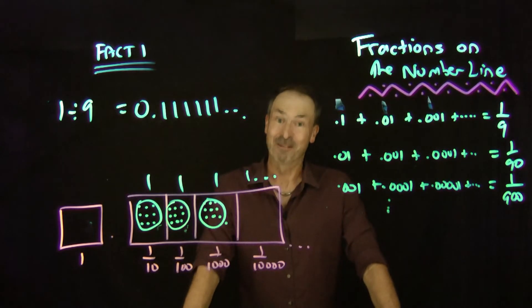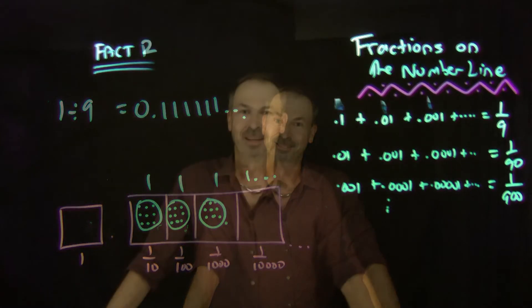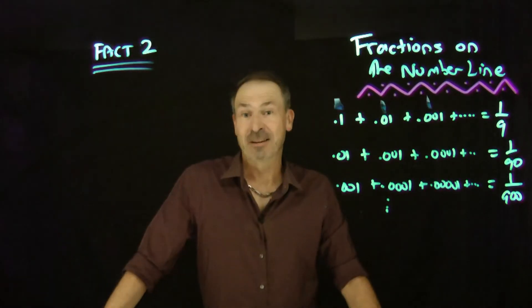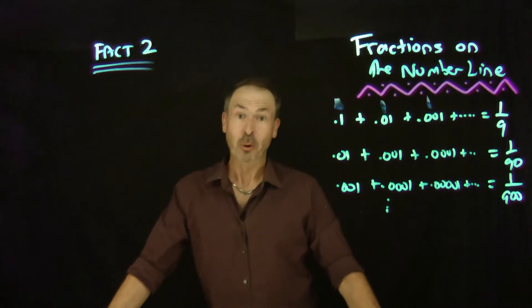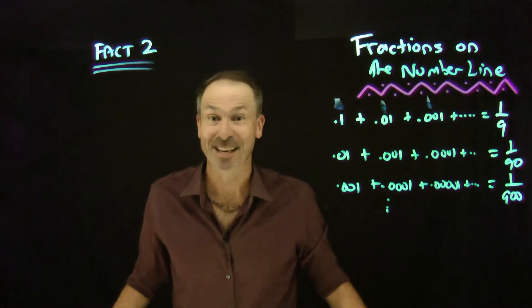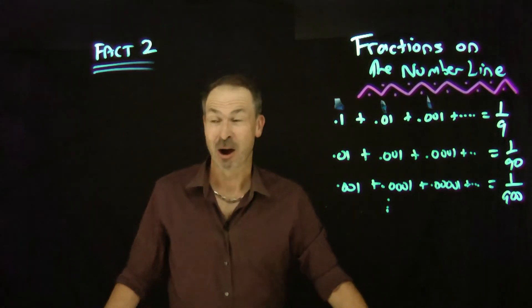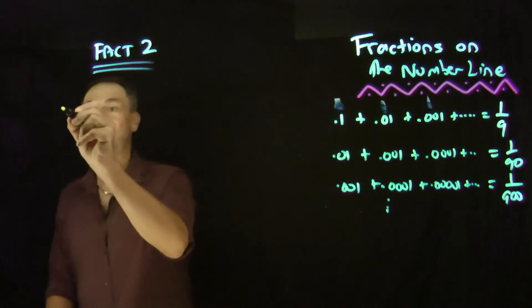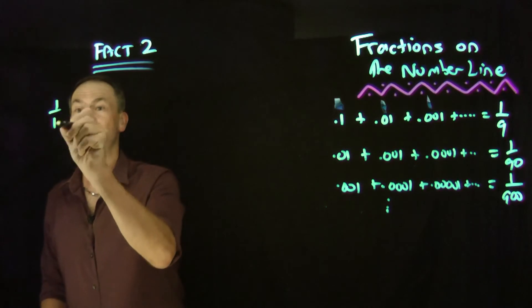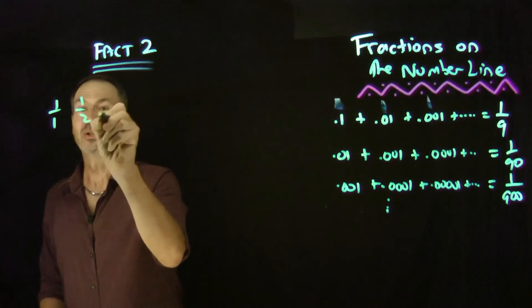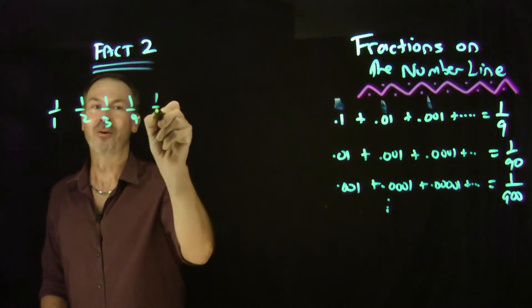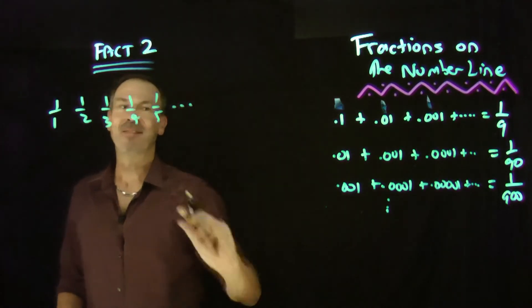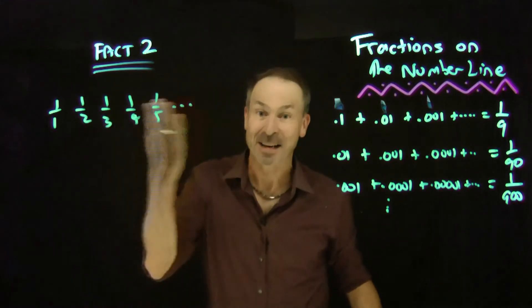That's my first fact. Here's the second fact I need: it's possible to put all the positive fractions in a list. For example, I could put all the unit fractions — 1 over 1, 1 over 2, 1 over 3, 1 over 4, 1 over 5, and so on — in a list.